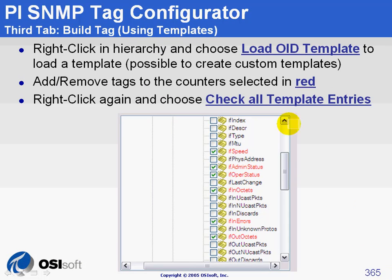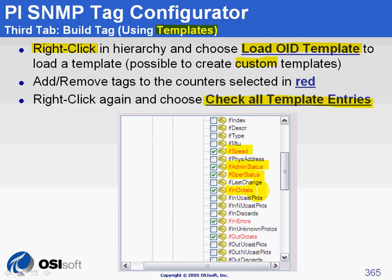Another interesting feature of our plugin is templates. You can use templates, just like in the performance monitor plugin, to configure tags. You right-click anywhere in the hierarchy and choose 'load OID template.' This allows you to load either an OSIsoft template or a custom template you built. Once the template is chosen, entries included in the template are marked in red. You can add more entries, and when you're ready, right-click again anywhere in the hierarchy and choose 'check all template entries' to select everything marked in red. You can also create your own templates via the right-click menu.